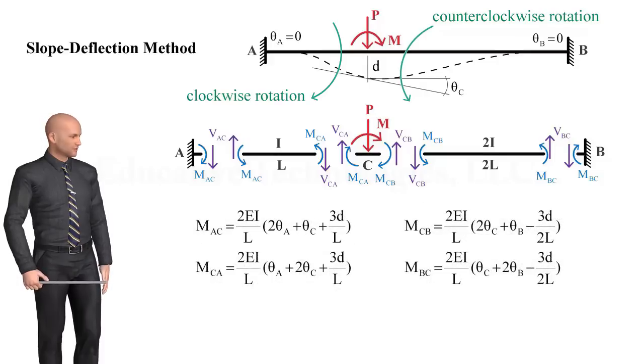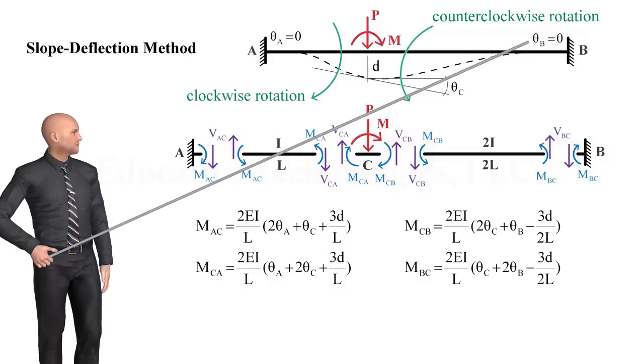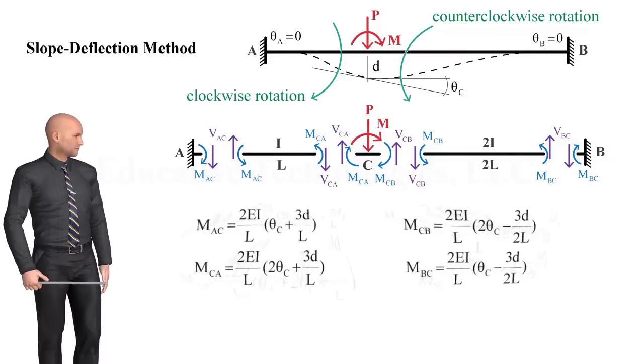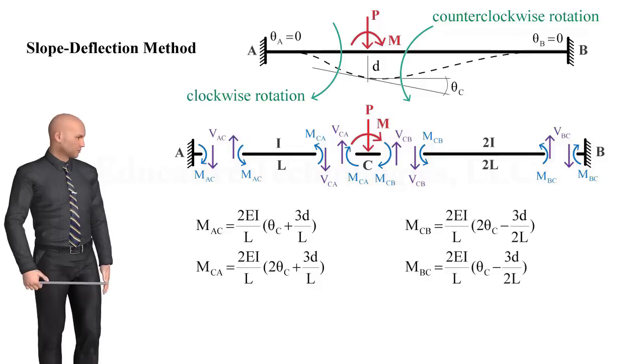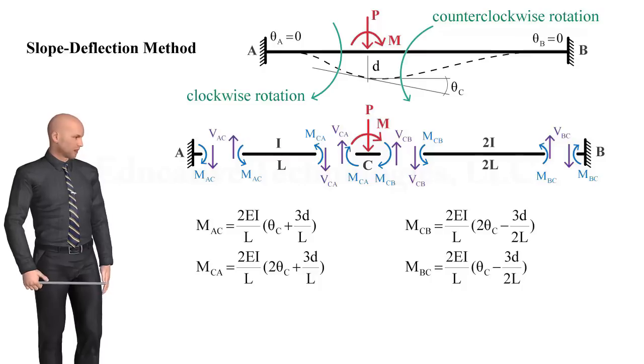Let's simplify these equations further by substituting 0 for theta A and theta B. Also, note that we can express the member-end shear forces in terms of the end moments using the static equilibrium equations.